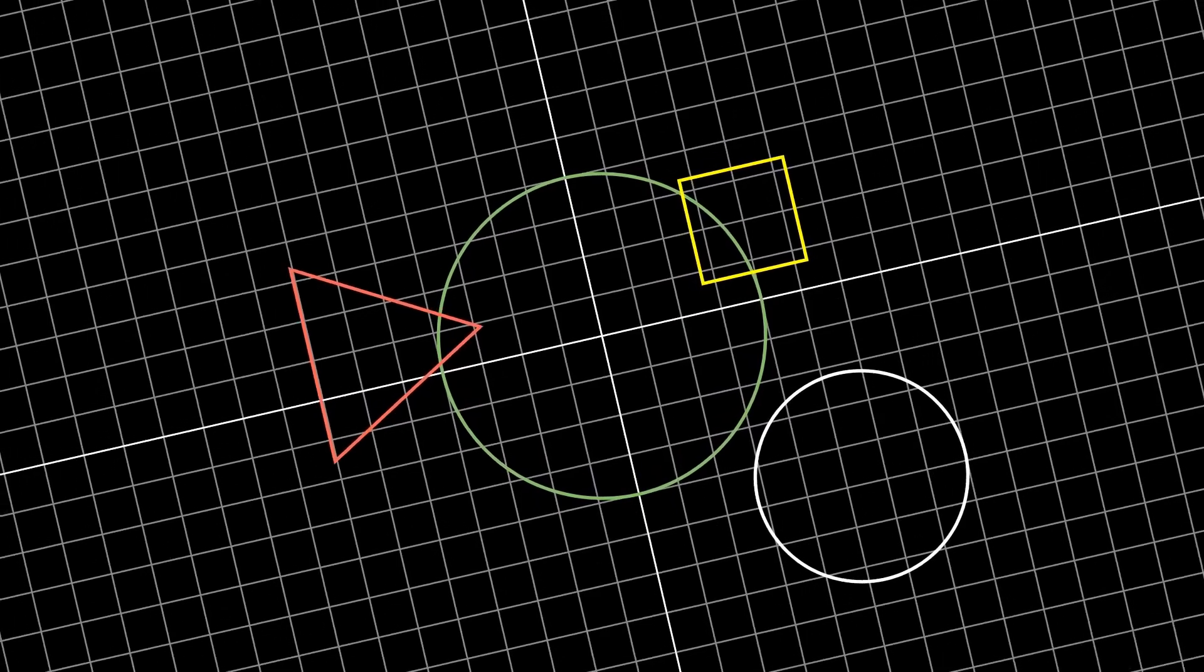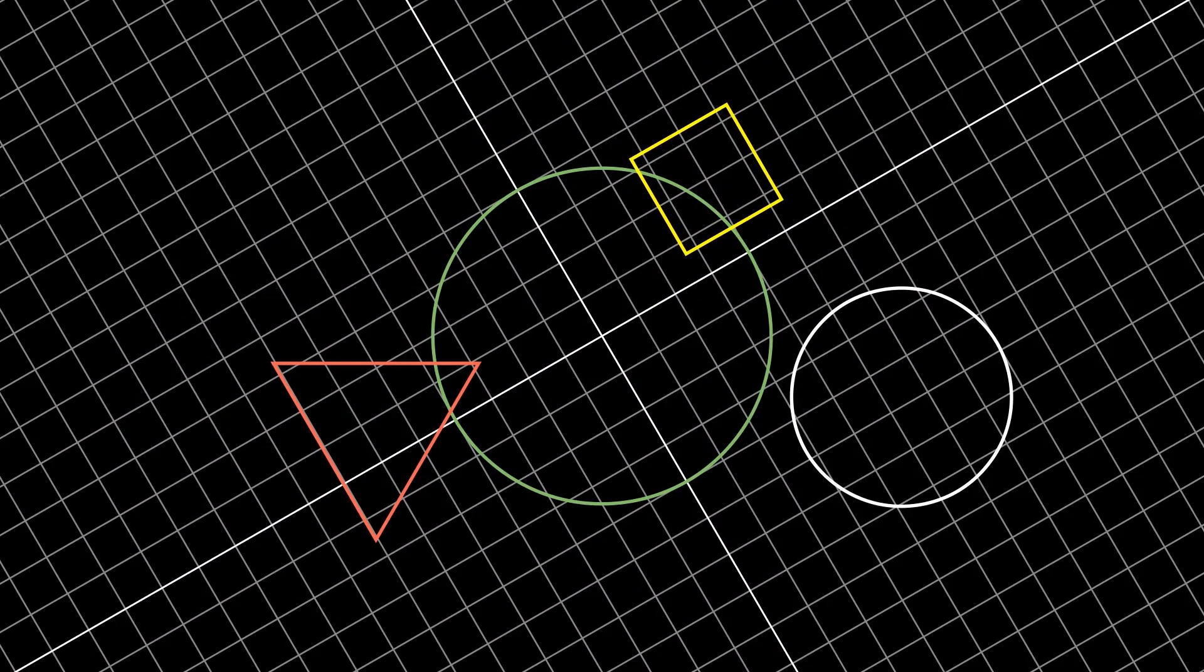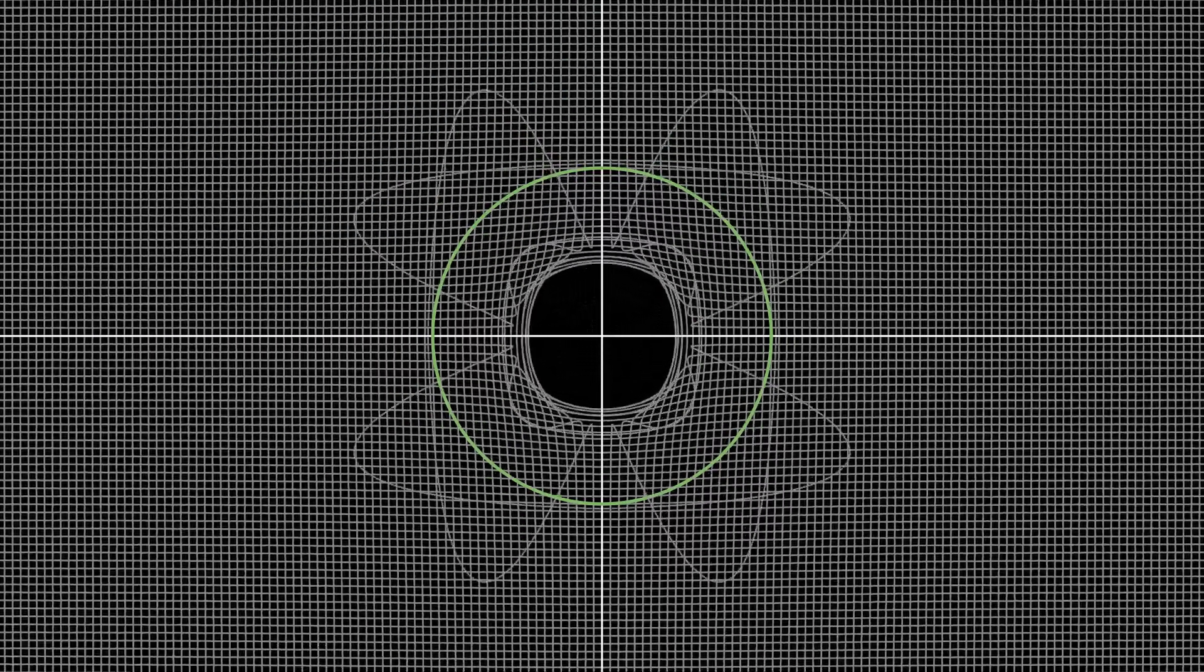Circle inversion, however, is a non-linear transformation. It looks a little bit like this. We have a green reference circle and we're performing an inversion of the plane. Notice how the inside gets mapped to the outside and vice versa.